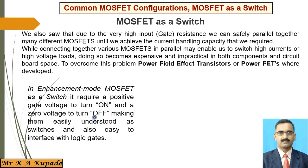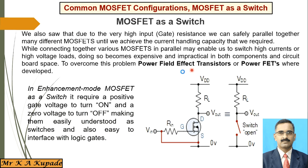If you want to turn this particular switch on, you have to apply some gate voltage. Due to this gate voltage, the MOSFET turns to the on position, so that whatever VDD voltage is applied, the drain current ID will flow through the device. When it flows, the switch is closed — that means the transistor is on.